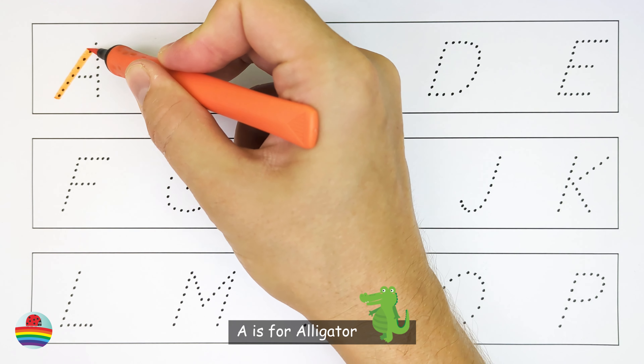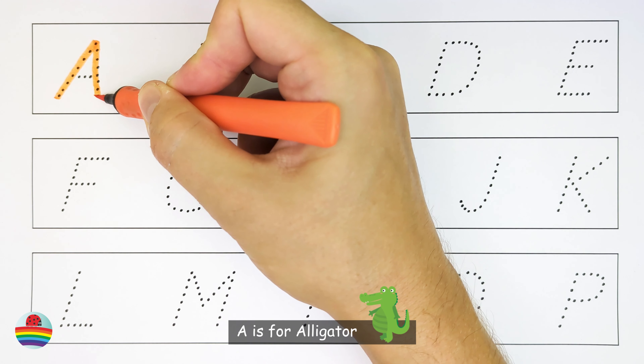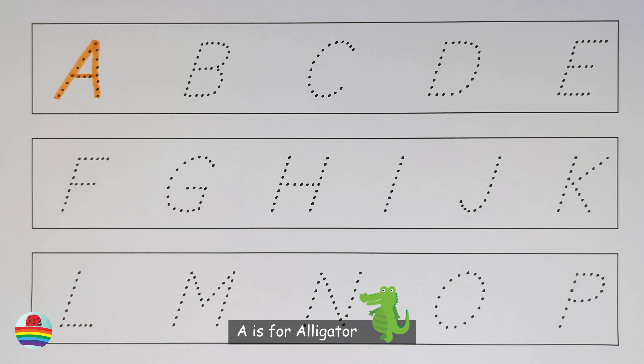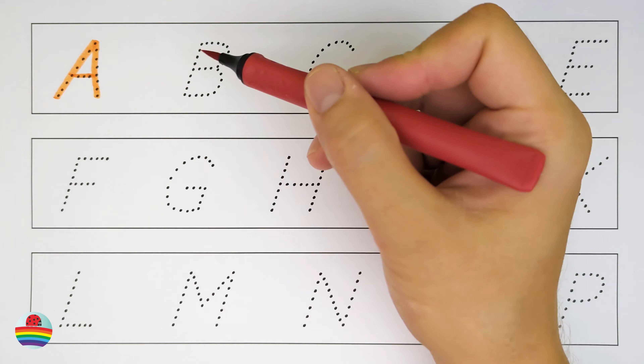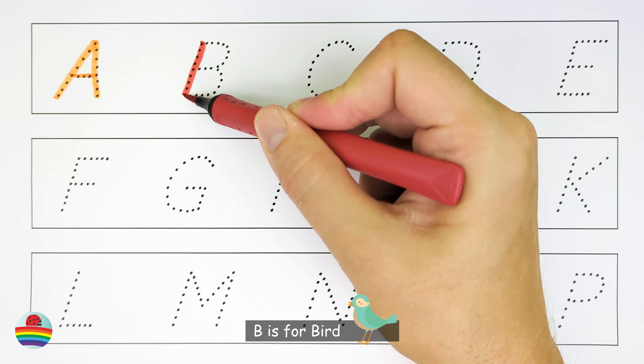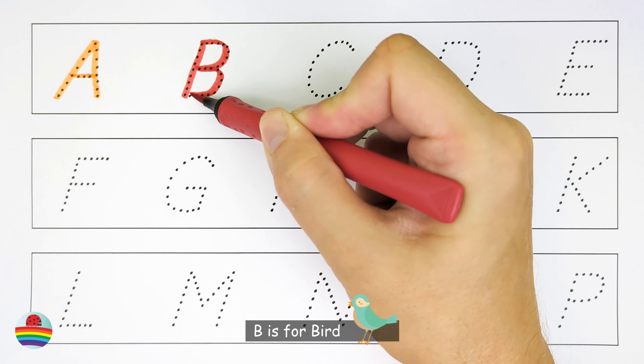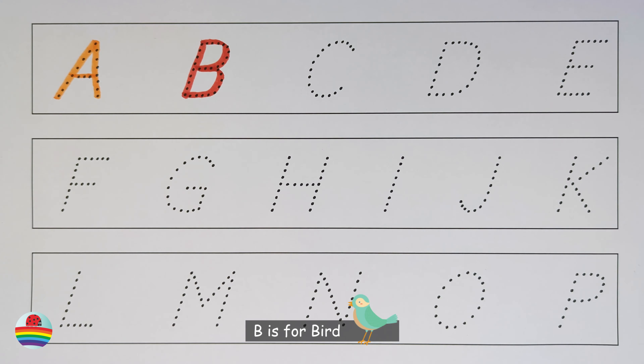A. A is for alligator. A. B. B is for bird. B.